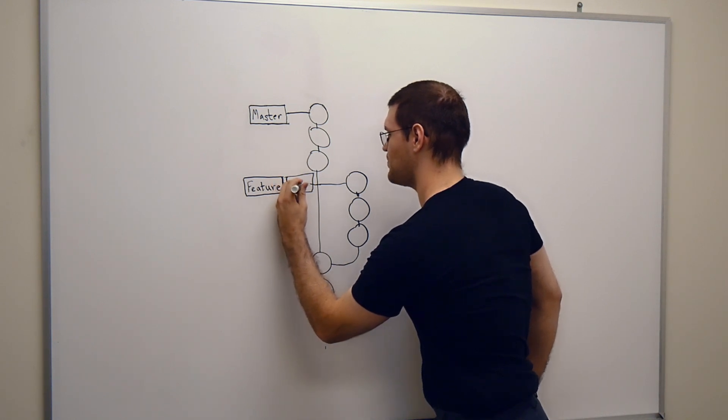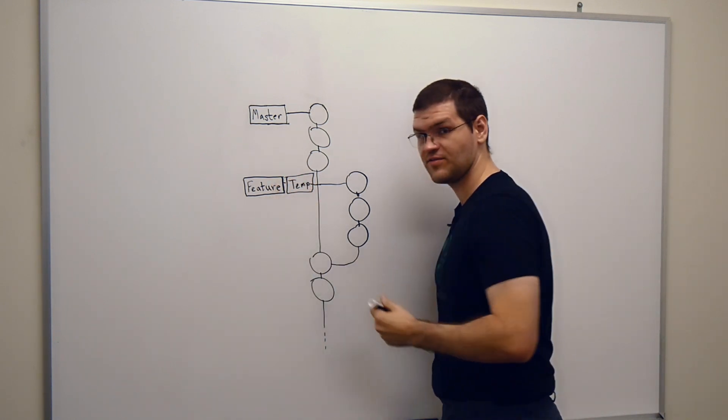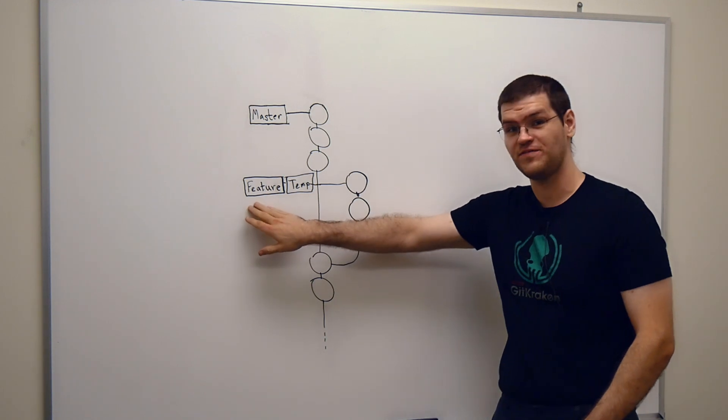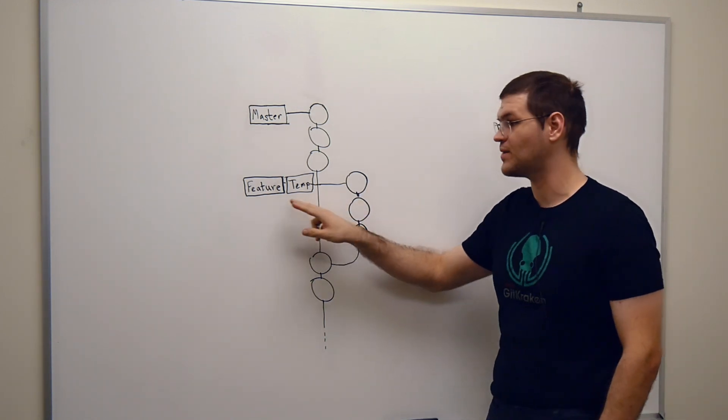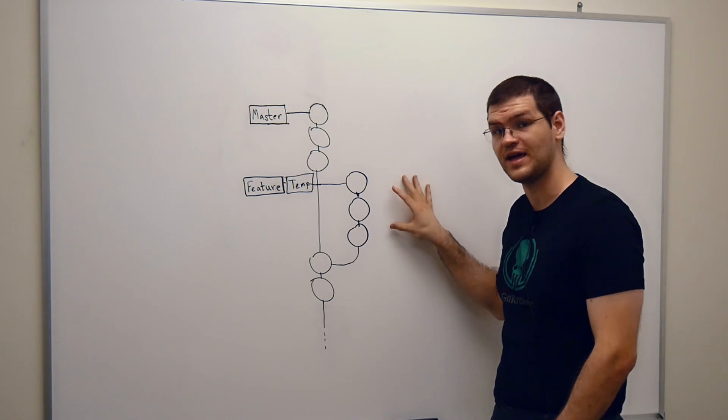I'm just going to call it temp because it's not supposed to last very long. So now I can do anything I want with feature and these commits won't go away because temp is also pointed at them. I can delete the feature branch and I'll still have these commits.